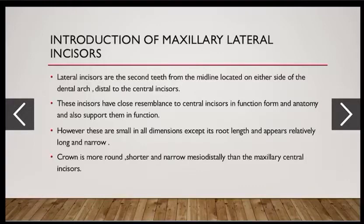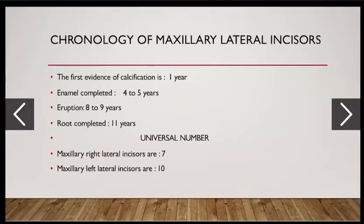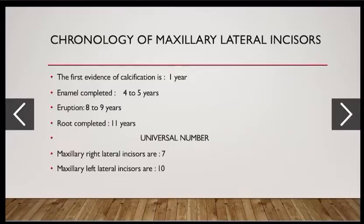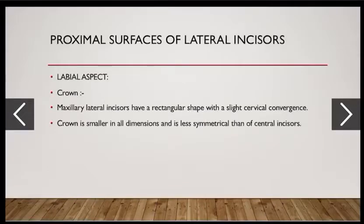The crown of the lateral incisor is more round, shorter, and narrower mesiodistally than the maxillary central incisors. Chronology: first evidence of calcification is one year, completion of enamel is four to five years, eruption period is eight to nine years, and completion of root is 11 years. Universal numbers: maxillary right lateral incisors are number 7, and left lateral incisors are number 10.